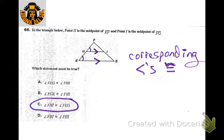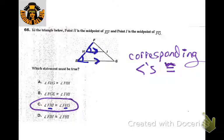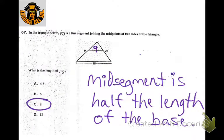When you have the triangle midsegment, the midsegment creates parallel lines, which creates corresponding angles that are congruent. That's angle FHI and angle FEG — make sure you know the middle letter is the vertex. The midsegment is always one half of the length of the base side.